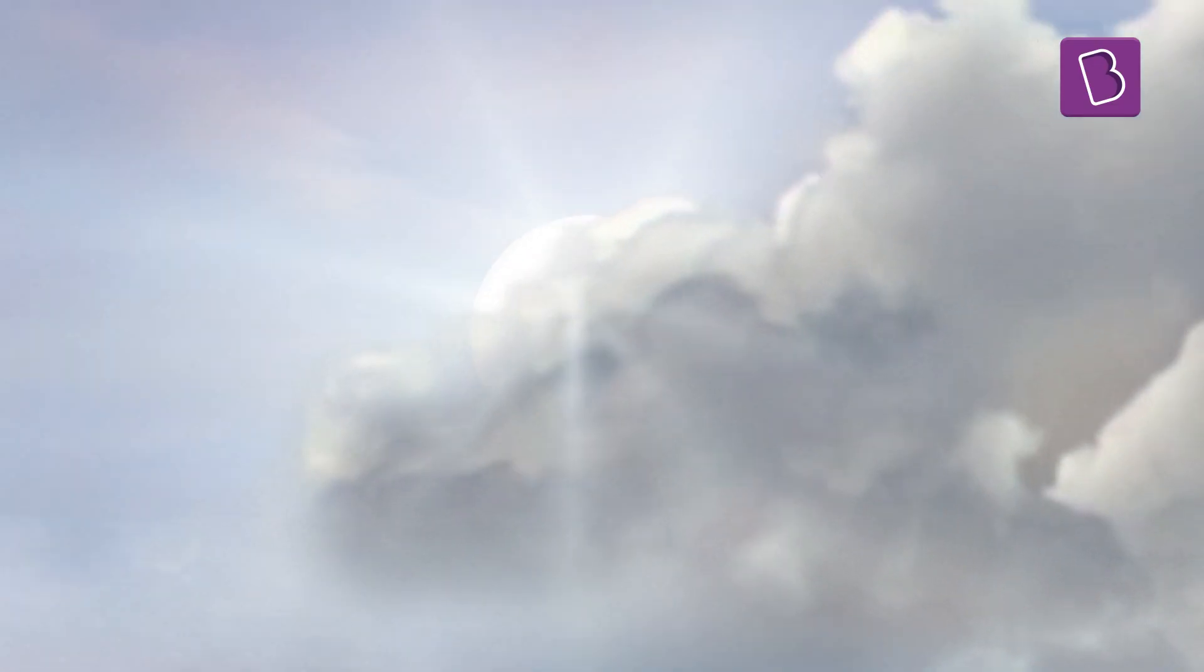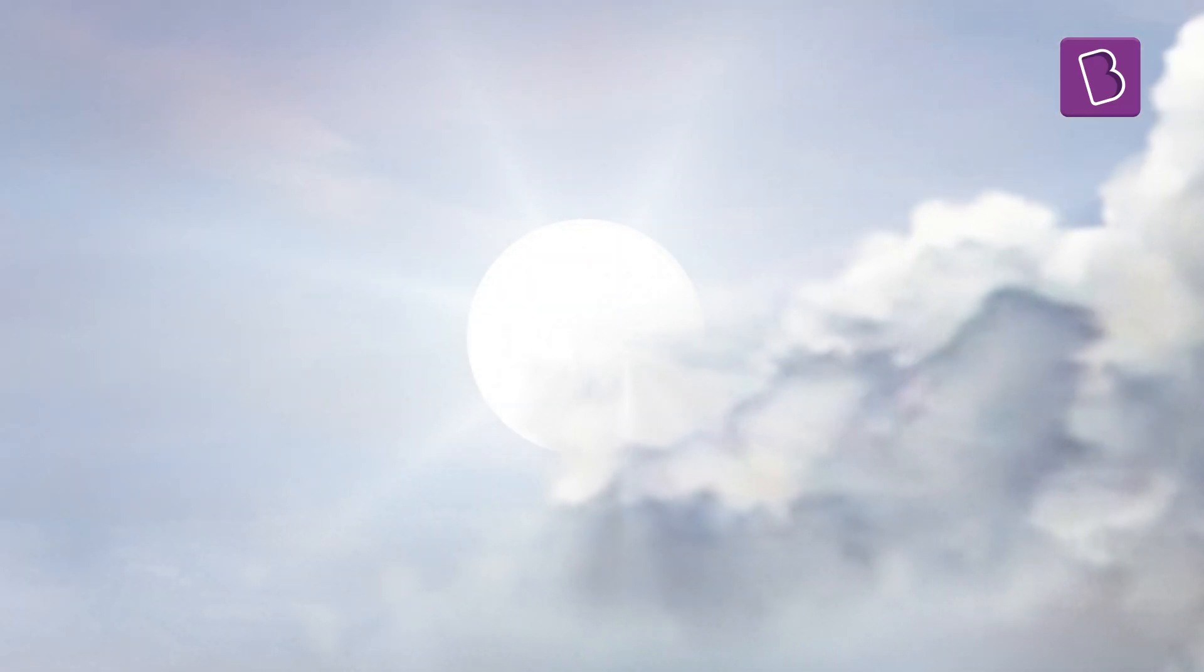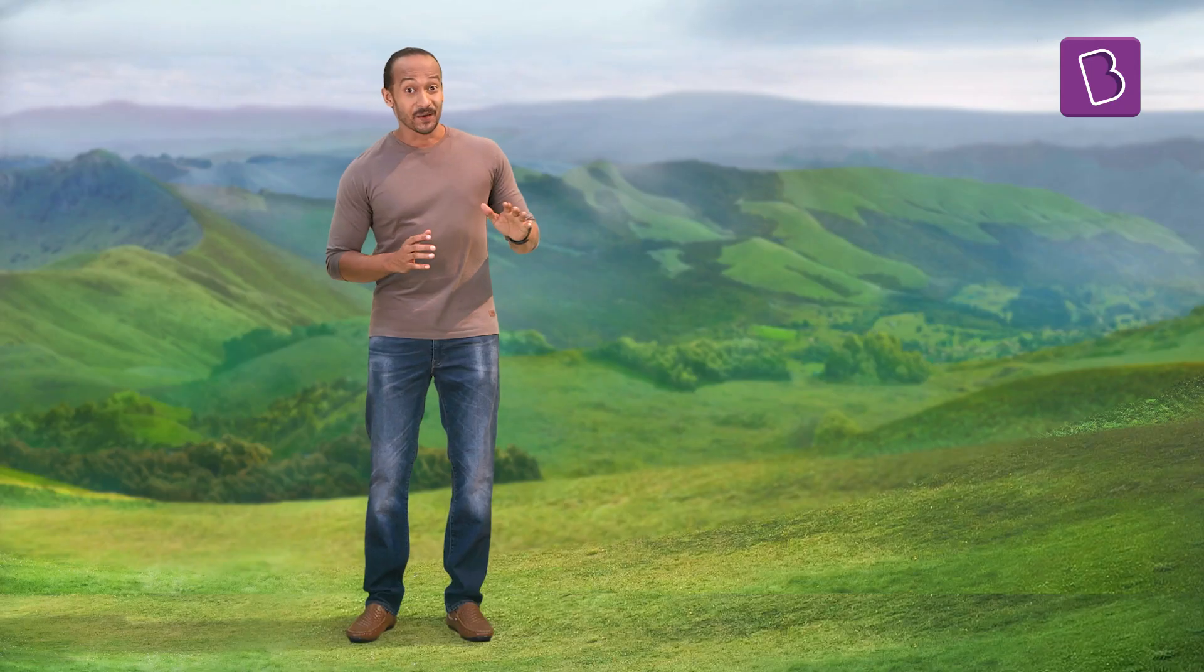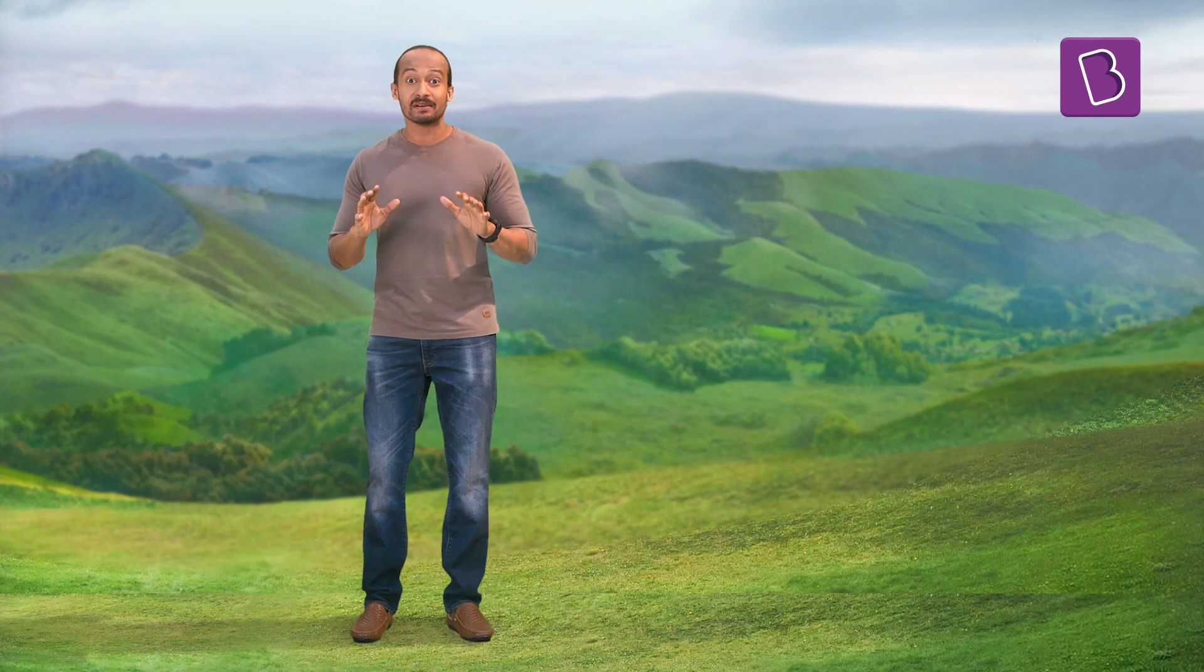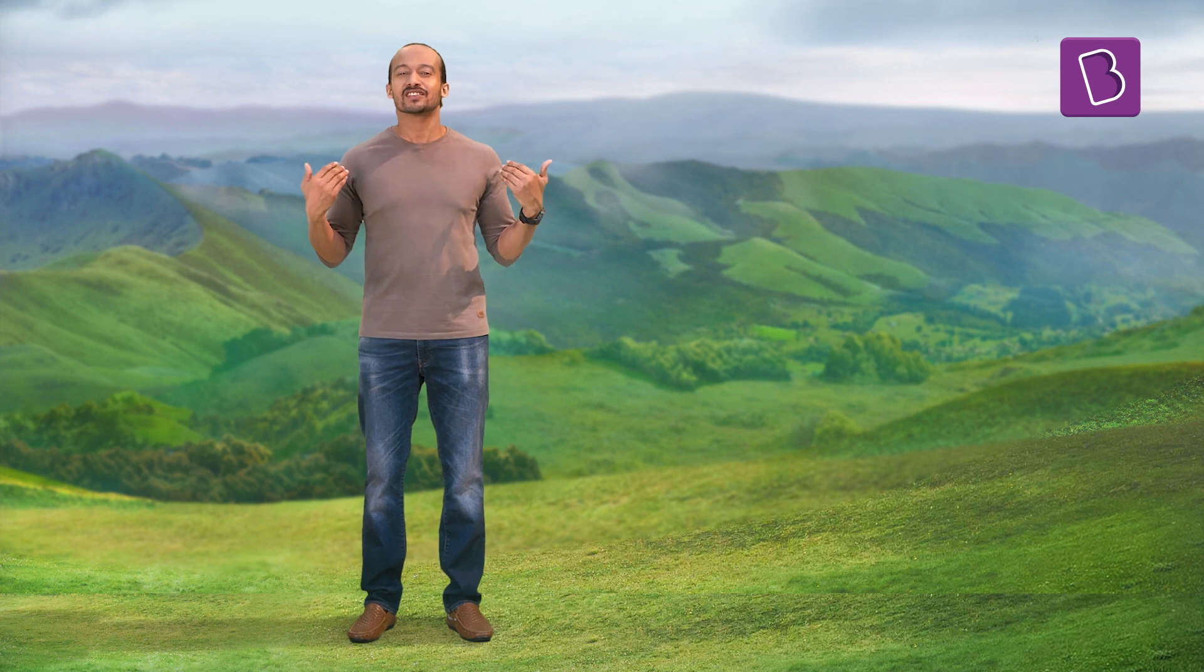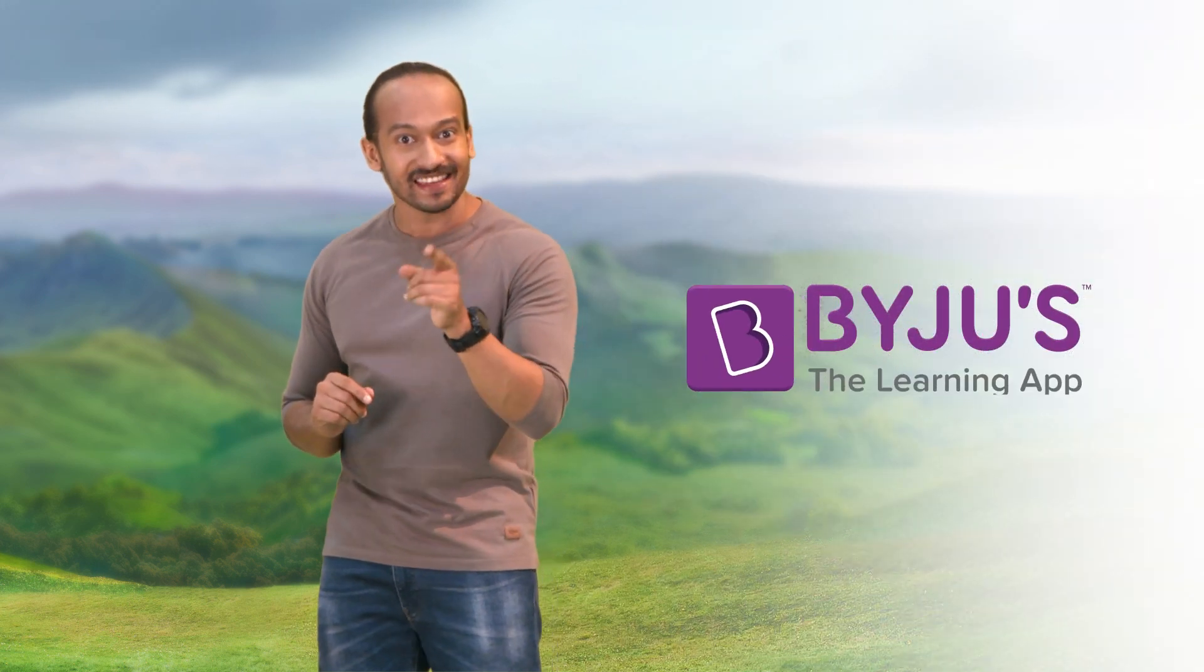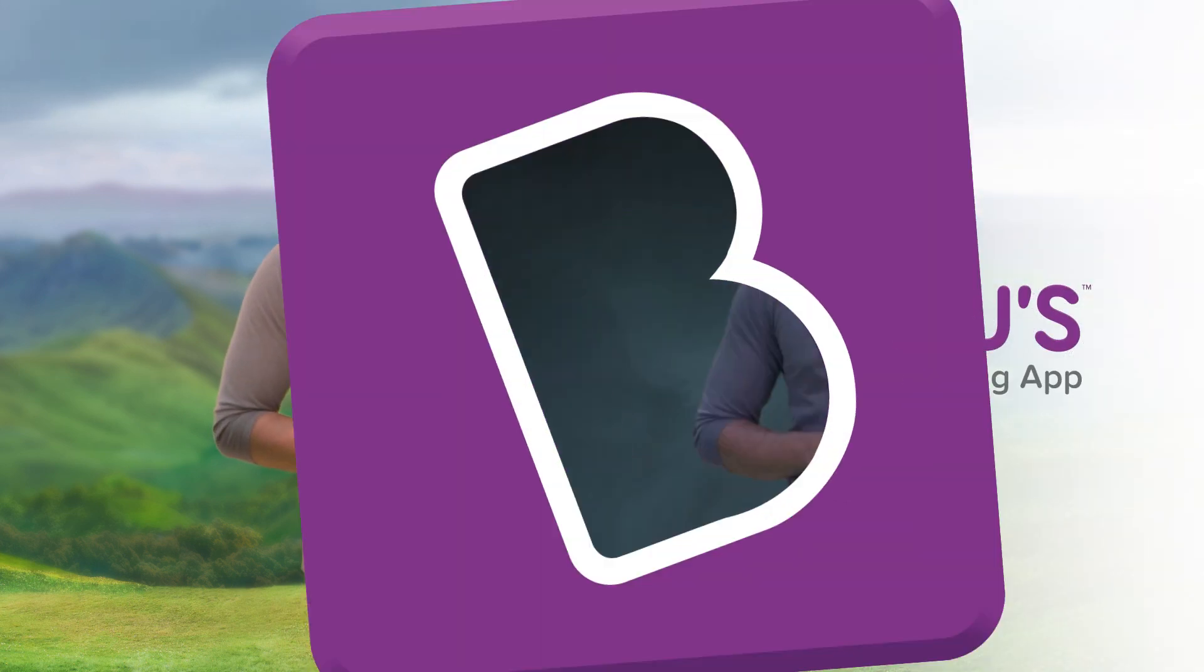Now the Sun actually emits white light. It just appears yellow to us. This itself is an interesting topic, by the way, and you can find out more about this on the Byju's app. Now the Sun's white light is in fact made up of seven colors, each having its own wavelength.